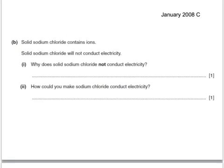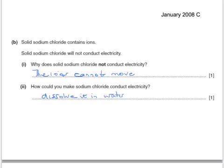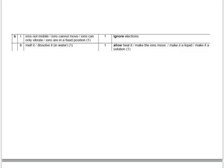Here's an exam question. Solid sodium chloride contains ions. Solid sodium chloride won't conduct electricity — why does it not conduct electricity? The ions cannot move. But how could you make it conduct electricity? You've got two choices: you could either dissolve it in water or melt it. You'd only need to write one of these two answers. So it doesn't conduct because the ions aren't mobile, can't move, can only vibrate, or are in fixed positions. You can get it to conduct by either melting it or dissolving it in water.